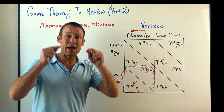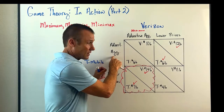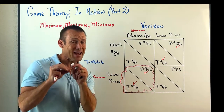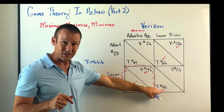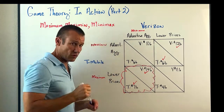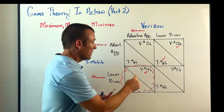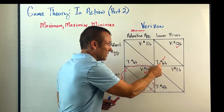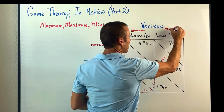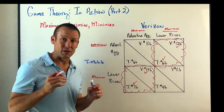They could also follow the maximin strategy — maximize their minimum. For T-Mobile: advertising aggressively gives minimums of $6B and $6B; lowering price gives $7B and $4B. To maximize their minimum, T-Mobile would advertise aggressively, ruling out the $4B outcome. For Verizon: advertising aggressively has a minimum of $10B; lowering price has a minimum of $11B. So Verizon's maximin strategy is to lower price. That outcome is where both maximin strategies lead.